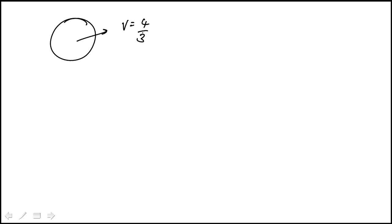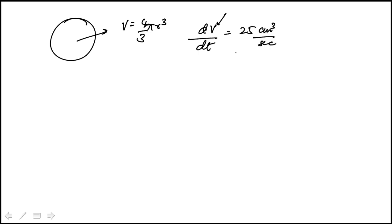In this question we're given a spherical balloon, and we know that the volume of a sphere is 4/3 π r³, where r is the radius. We're told that it's being inflated at a constant rate, which means the rate of change of the volume is 25 cubic centimeters per second. The question is: at what rate is the radius of the balloon changing when the radius is 2?